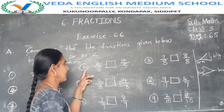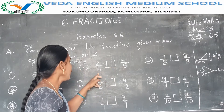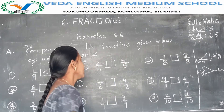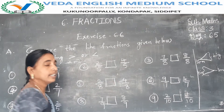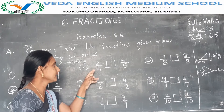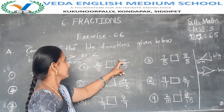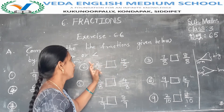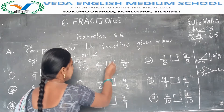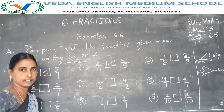Next, the second one: 2 by 5 and 4 by 5. In these two fractions the denominators are the same — 5 and 5. But the numerators change — here 2 and 4. Which one is the bigger number? 2 is smaller than 4, and 4 is the bigger number, 2 is smaller. So in this box also we use less than.